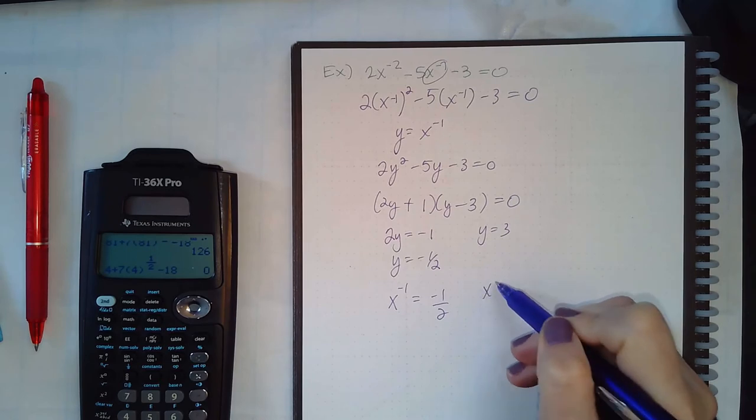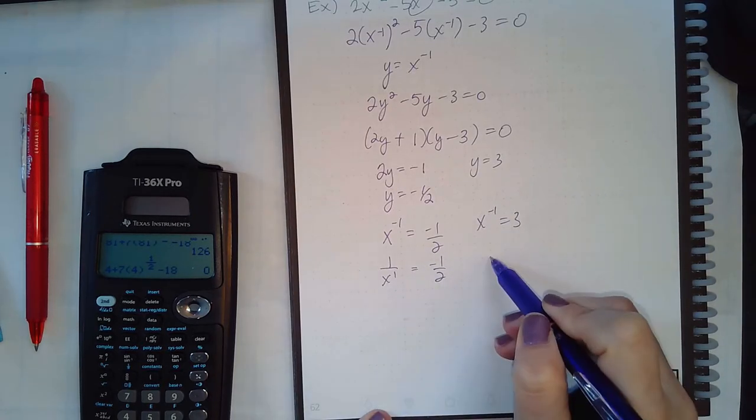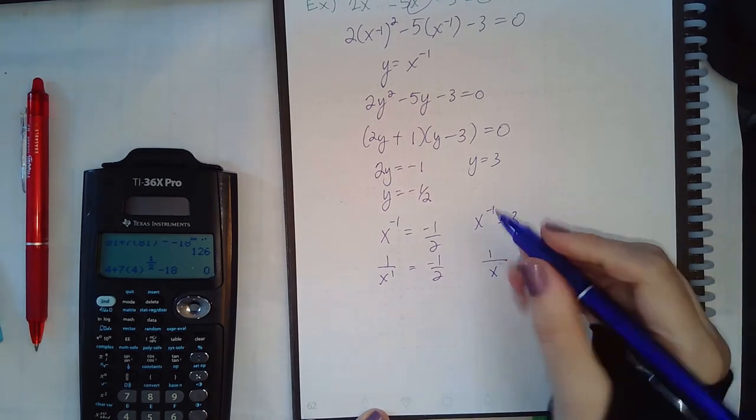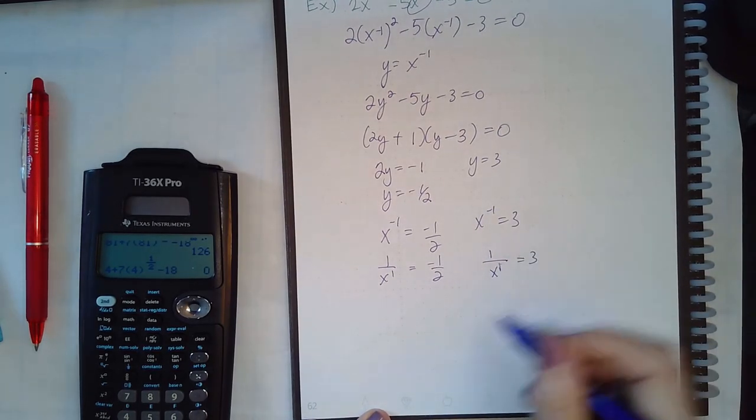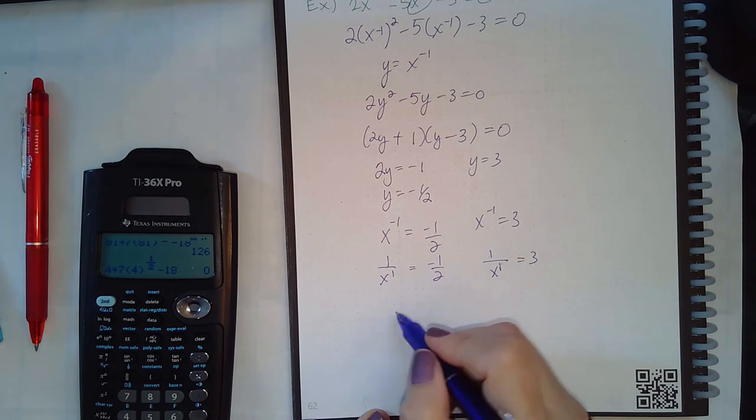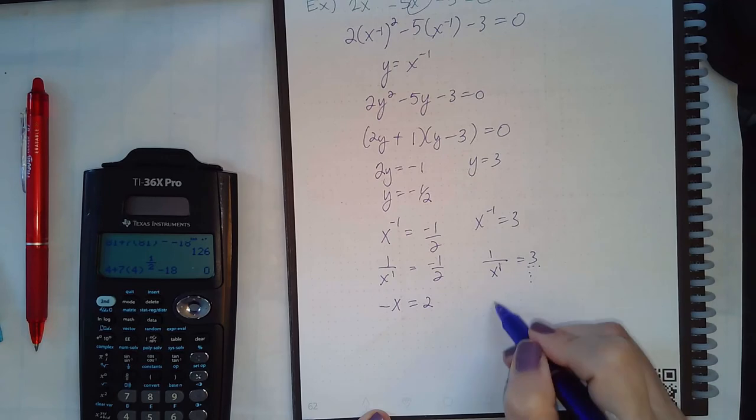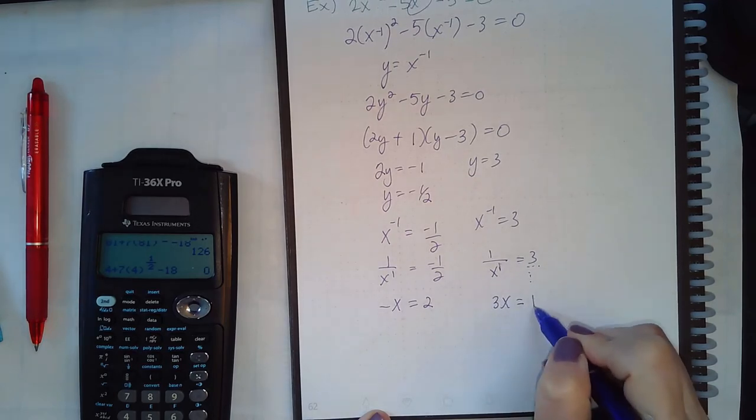Remember what a negative exponent represents. It means that that term will have to go in the denominator and then it becomes positive. So then if I cross multiply here, I will get negative x equal to 2. If I cross multiply here, I get 3x equal to 1.